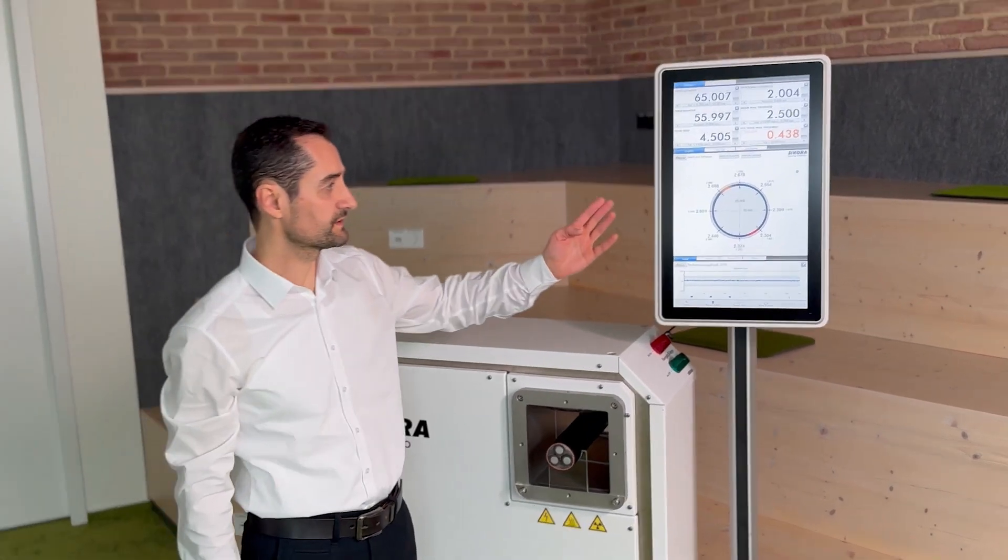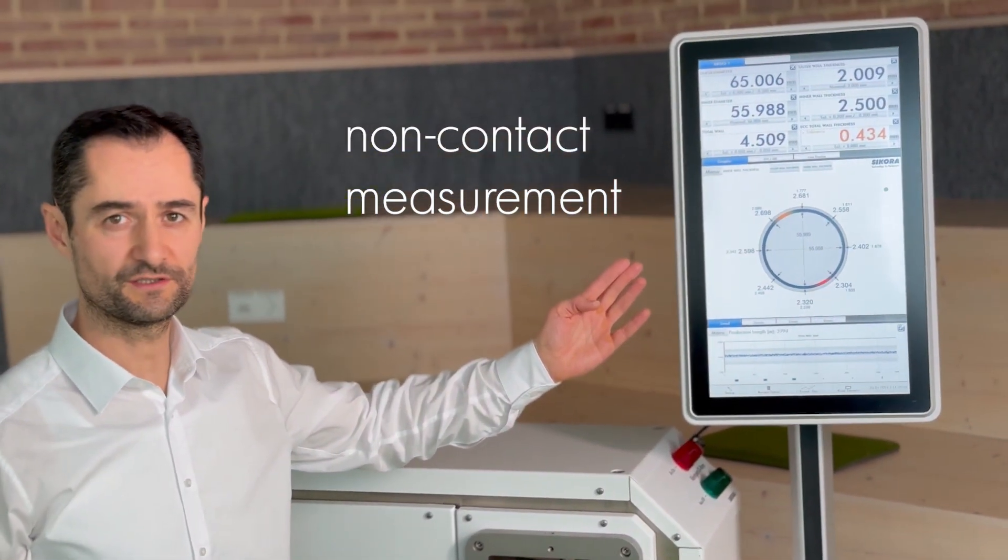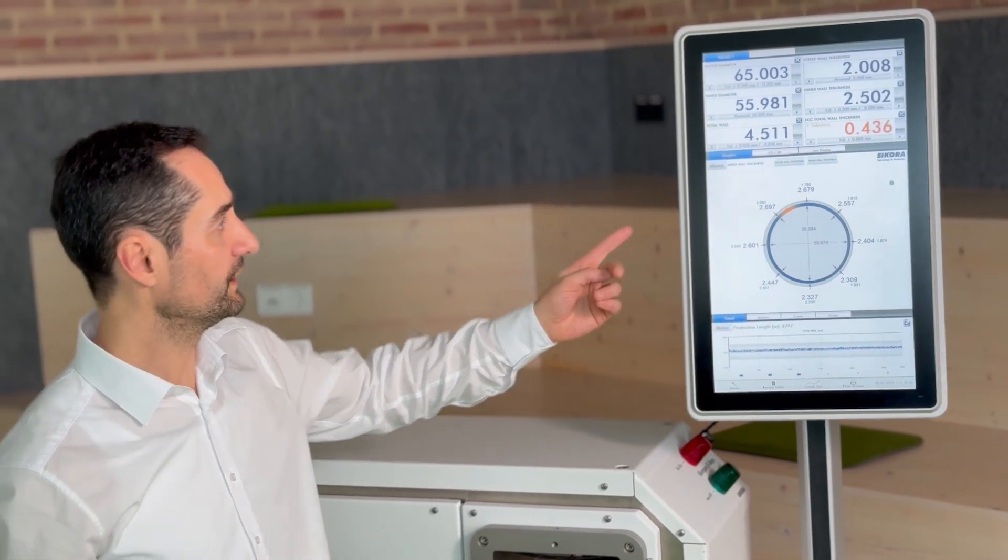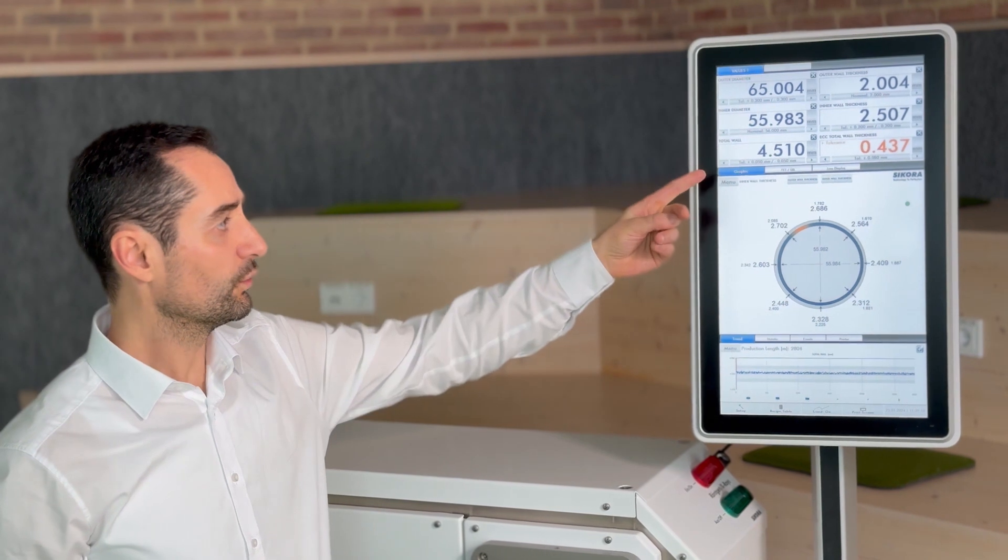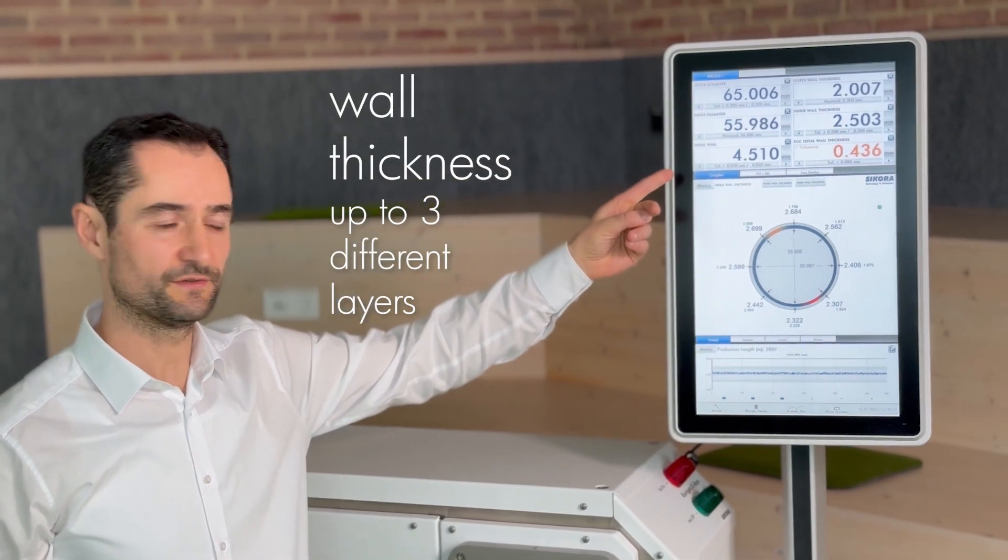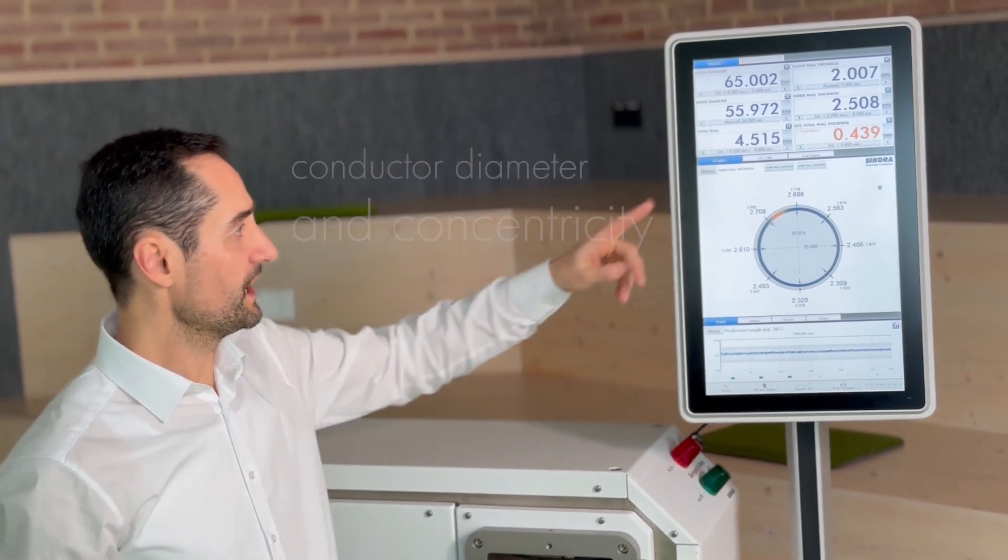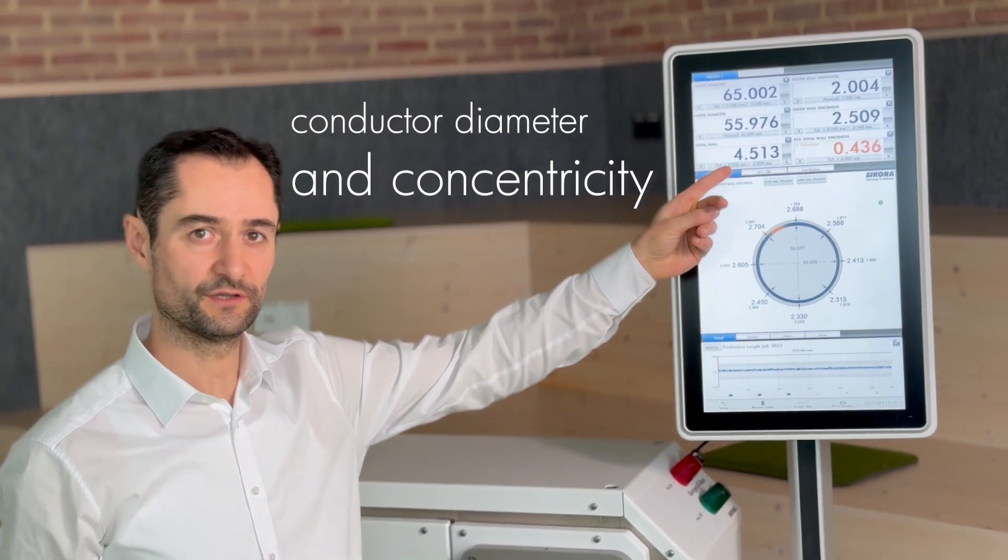The system provides non-contact, non-destructive measurement of the outside diameter and ovality, wall thickness measurement up to three different layers, and the diameter and concentricity of the conductor.